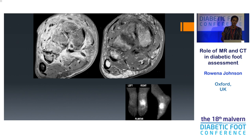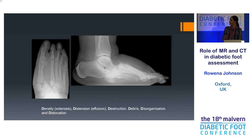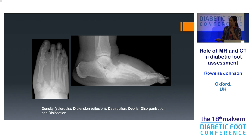With a classic neuropathic foot, you look for the five D's: increased density or sclerosis; distension with effusions — something you can see clinically or on ultrasound or MRI; destruction; debris; disorganisation; and dislocation. It's that complete remodelling. If we're finding it tricky on imaging, it's always really helpful to have clinical details — how symptomatic they are, onset, and what their inflammatory markers are doing — because they can be hard to differentiate, particularly in the early stages.